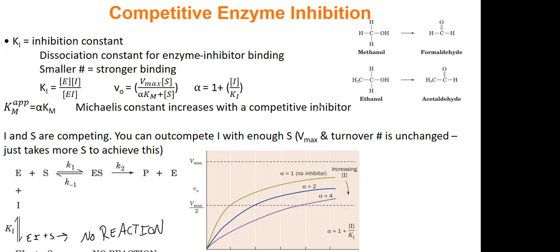Alright, so let's look at the equations of inhibition. So let me just rewrite what's down here, EI plus S make no reactions. Alright, so some things we have to, some terms we have to get down for this. First is the inhibition constant, KI. And what KI is, it's called a dissociation constant.